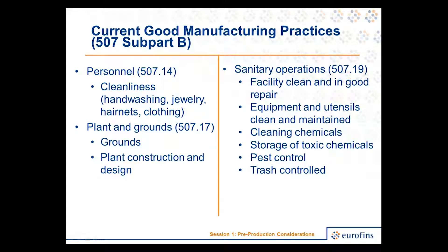Then we talk about plants and grounds — making sure we don't have any harborage areas or pest attractants. We talk about sanitary operations: the facility and cleaning and good repair, adequate sanitation, prevention of cross-contamination. Pest control is included in that section as well. In the animal food industry, many times we talk about hygiene instead of sanitation, and that's what would be covered in this section.